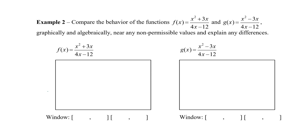So to do this, we're going to take a look at these two functions here. You can see that the only difference is that one is a plus 3x in the numerator and the other one is a minus 3x in the numerator, but the denominator is the same. So we're going to look at this graphically and then algebraically to explain any differences.